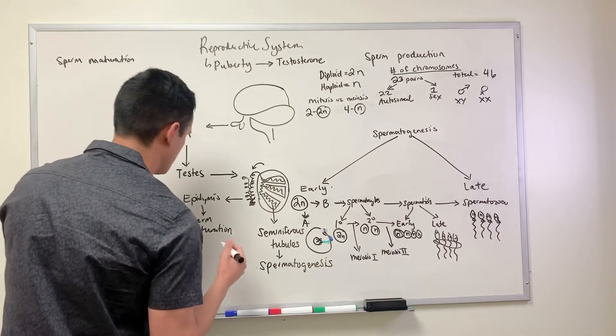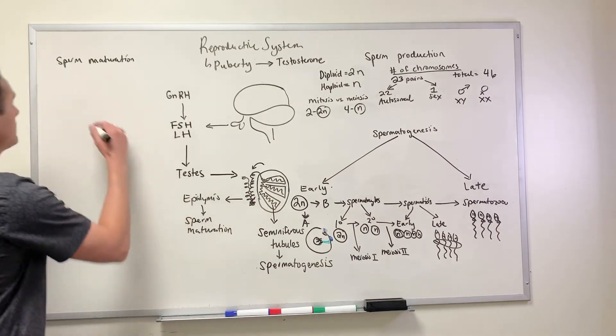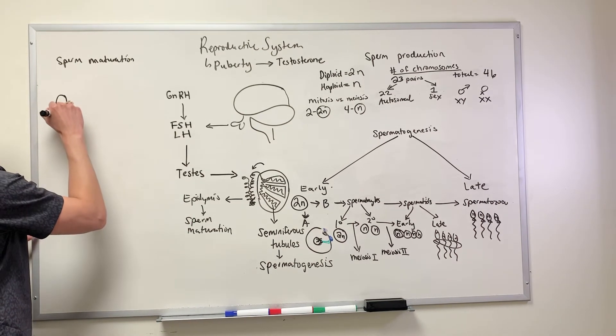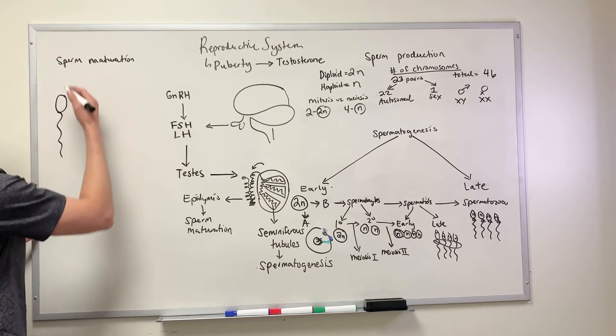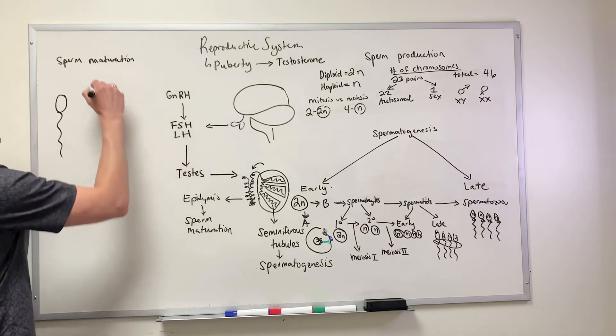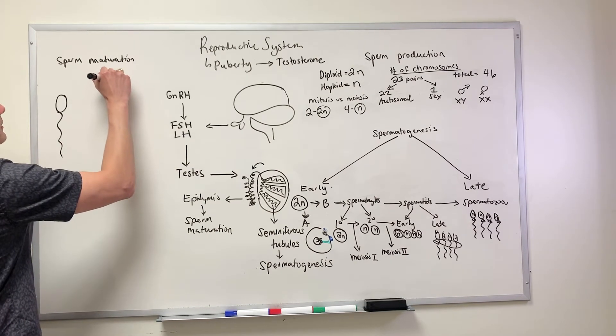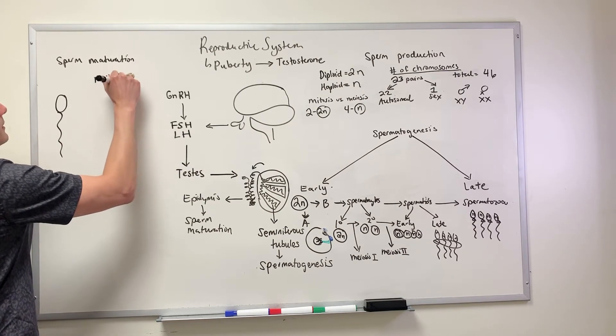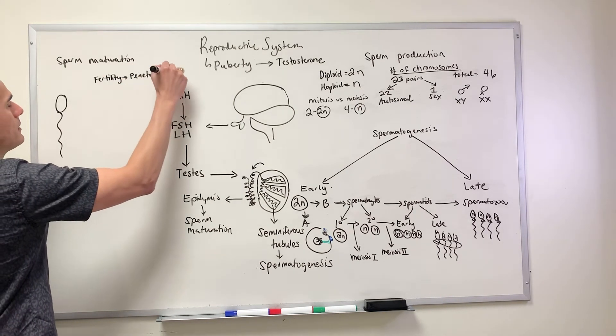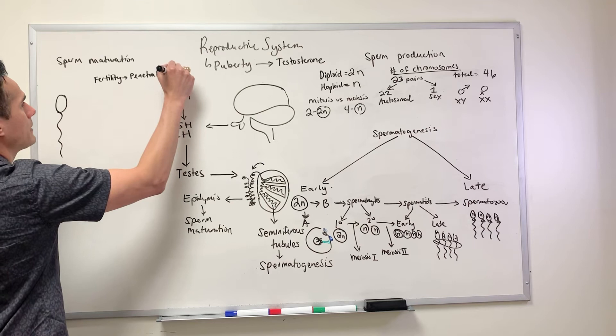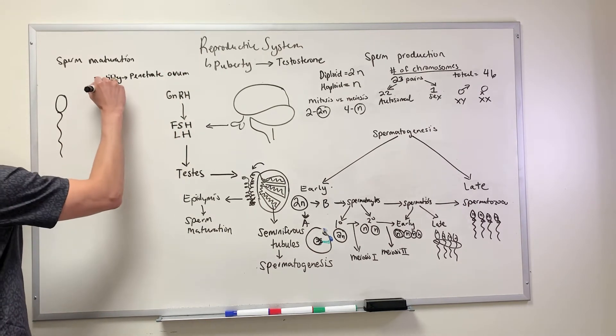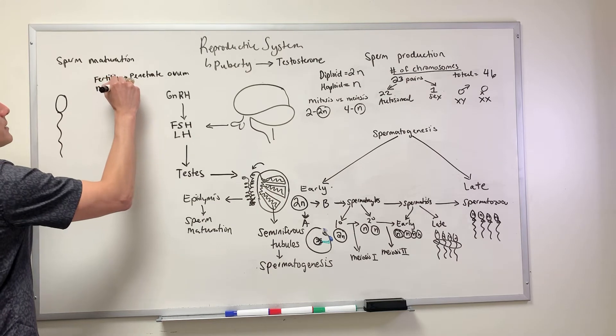What happens during sperm maturation? They travel to the epididymis. Let me draw my sperm cell here. They start to develop features that are going to help with fertility which will allow it to penetrate the ovum or the egg, and we also need to improve motility, so its movement.